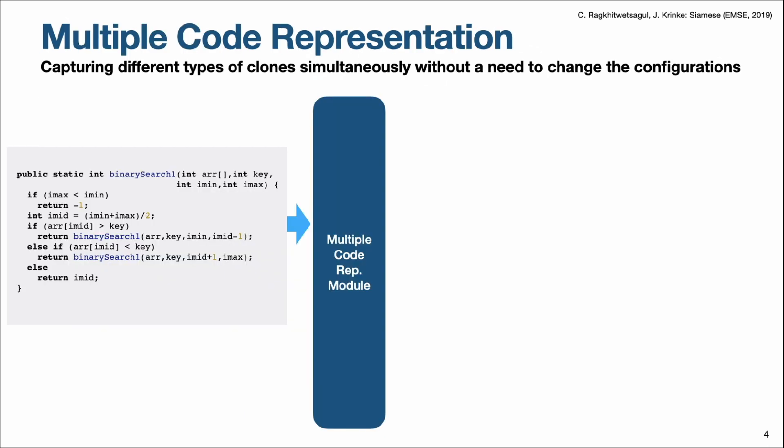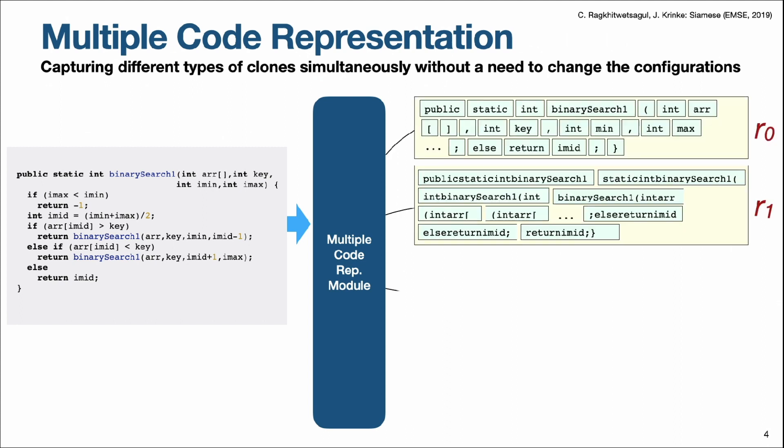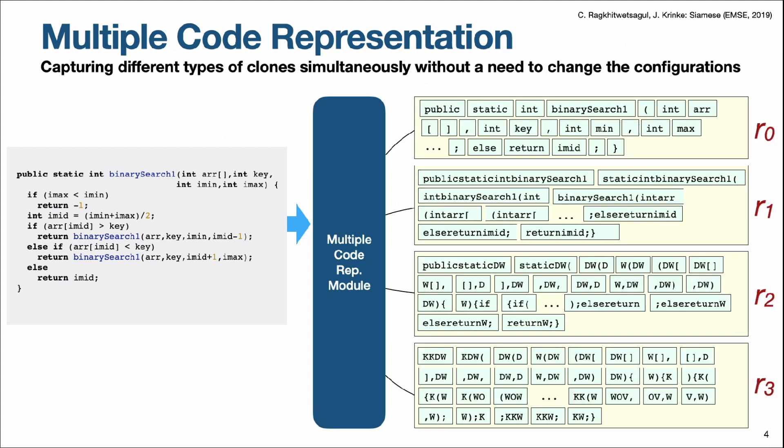Let's start with multiple code representations. Let's say we have this source code example that we want to search for clones on the left. These binary search code snippets will be fed to the multiple code representation module, and then Siamese will generate four code representations of the same source code. Each representation captures different types of code modifications found in code clones, such as variable renaming, different literal values, or added, deleted, or modified statements.